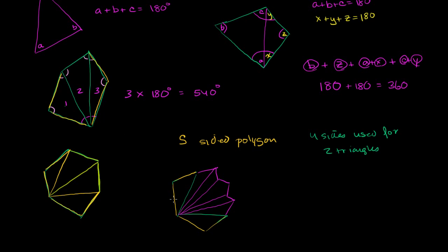So for example, this figure that I've drawn is a very irregular 10-sided polygon — a decagon. In this decagon, four of the sides were used for two triangles. And out of the other six remaining sides, I get a triangle each, so plus six triangles gives a total of eight triangles. So we can generally think about it: the first four sides give us two triangles, and the remaining sides — which are s minus 4 — each give one more triangle.